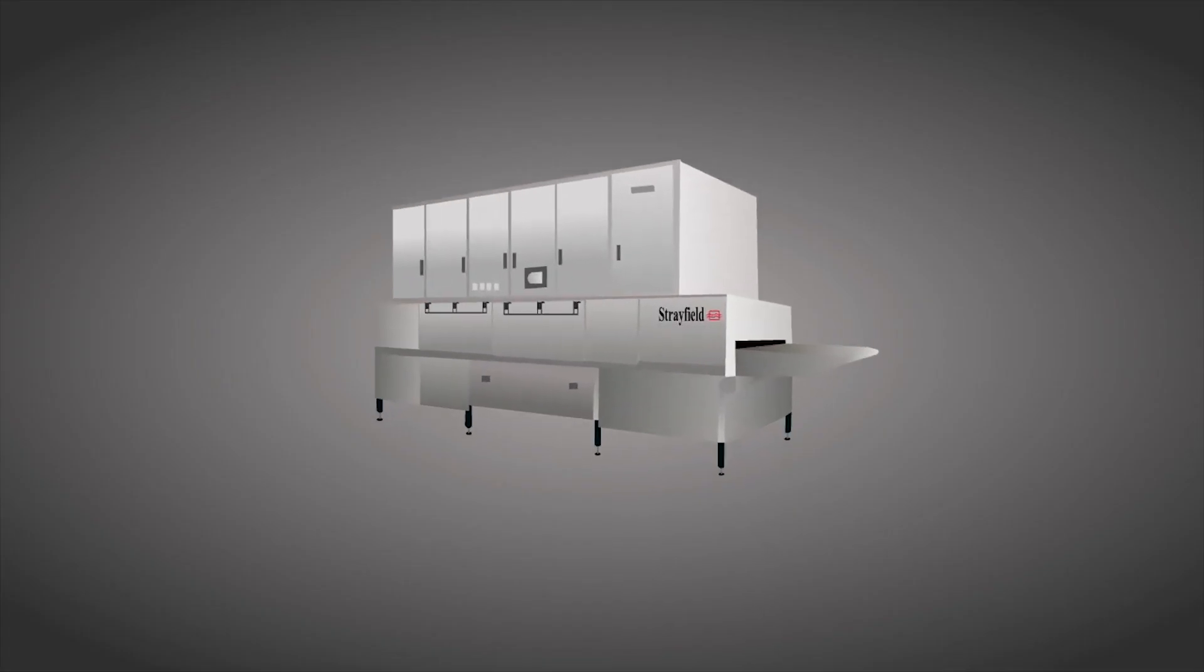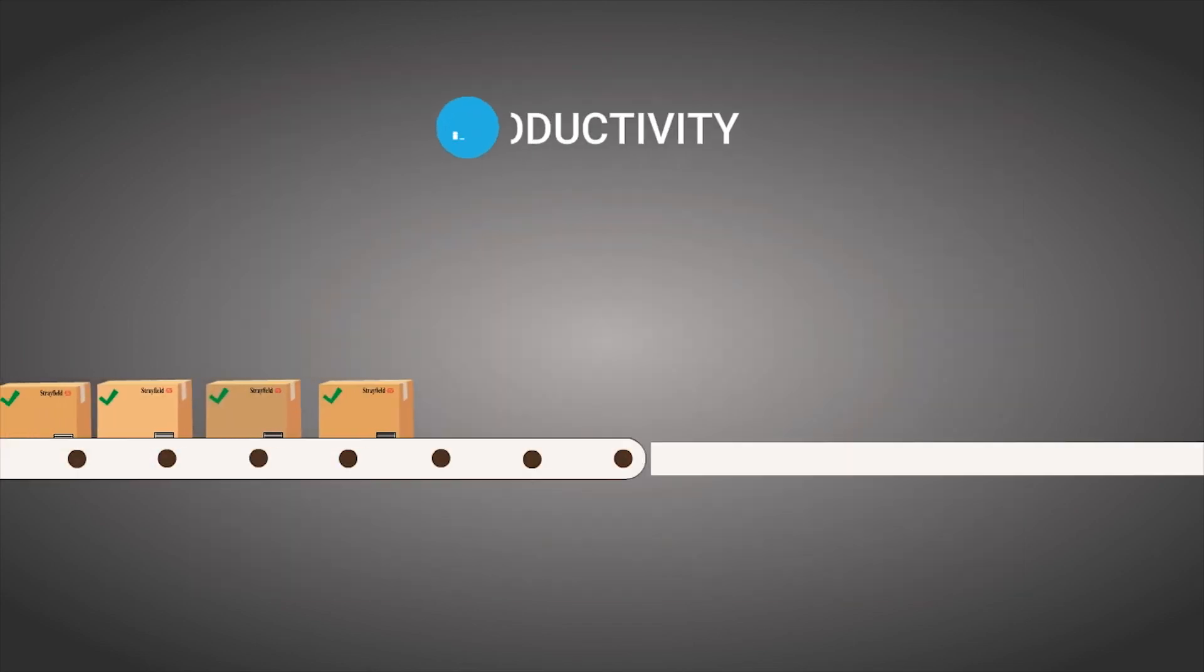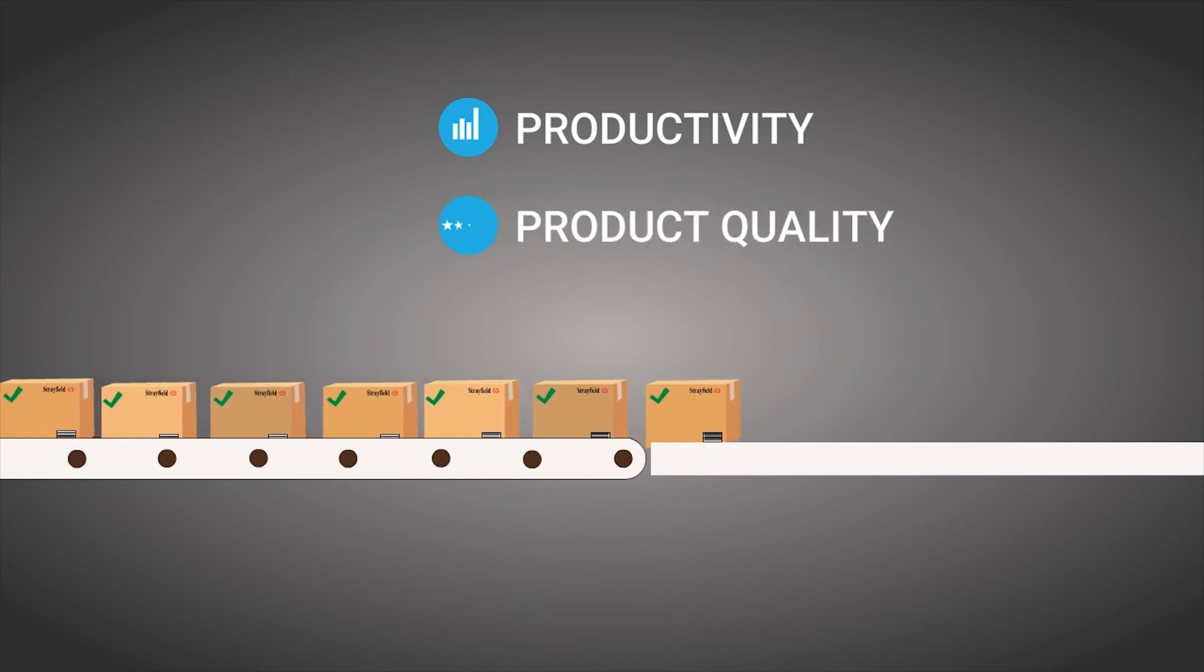Strayfield dryers thus work as much as 33% more efficiently than competing RF dryers, provide greater productivity and higher product quality.